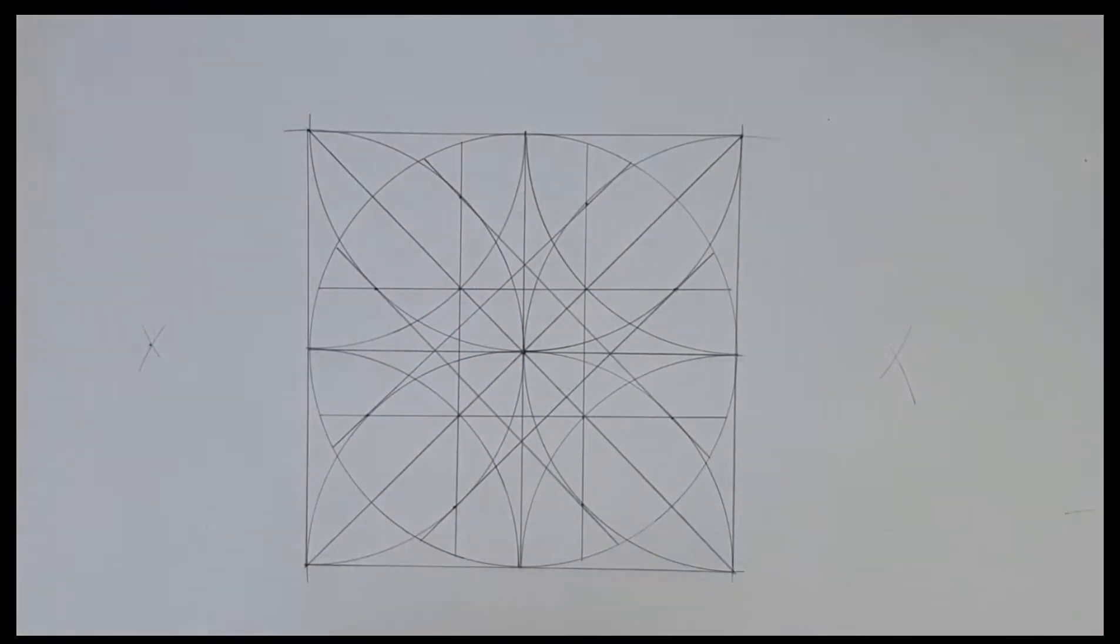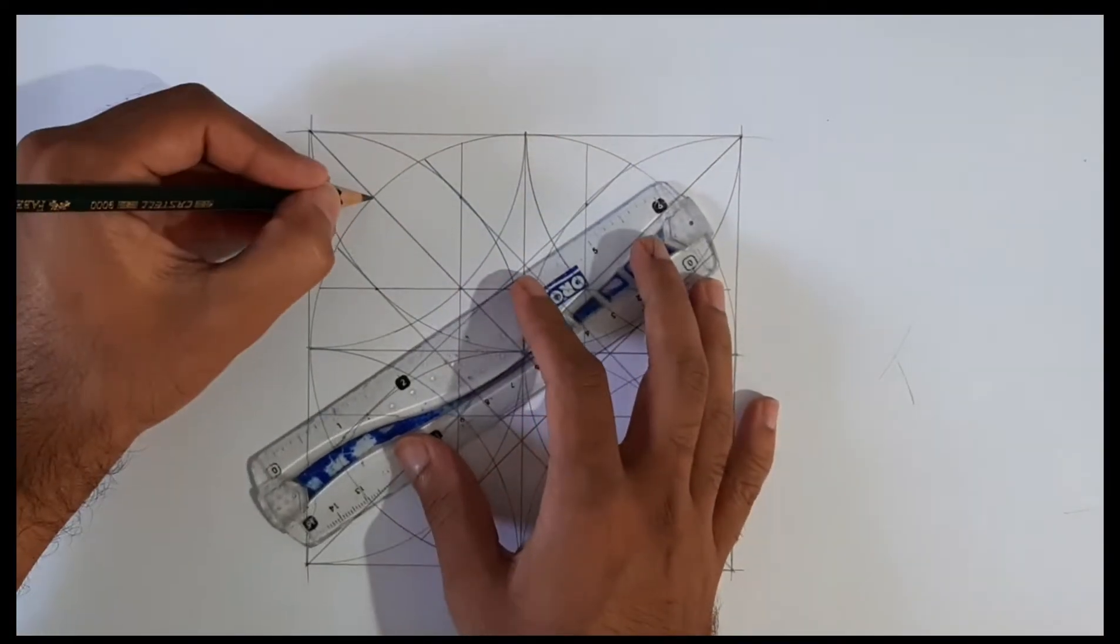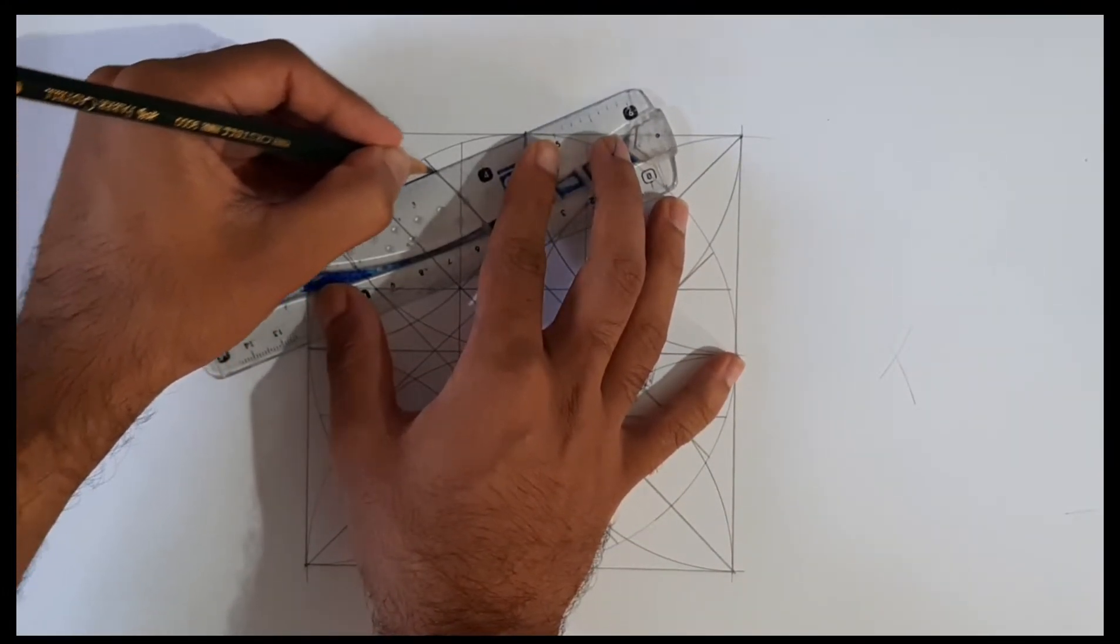The difficult lines are over and it's time to draw an octagon. We can draw the octagon earlier, but just to avoid messy lines I'm drawing it now.